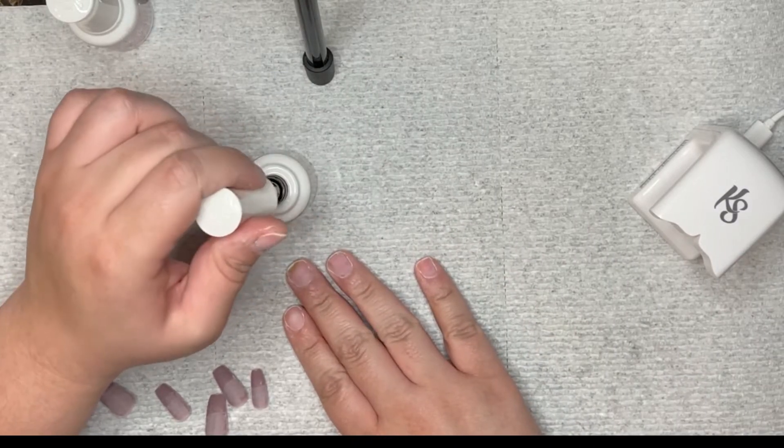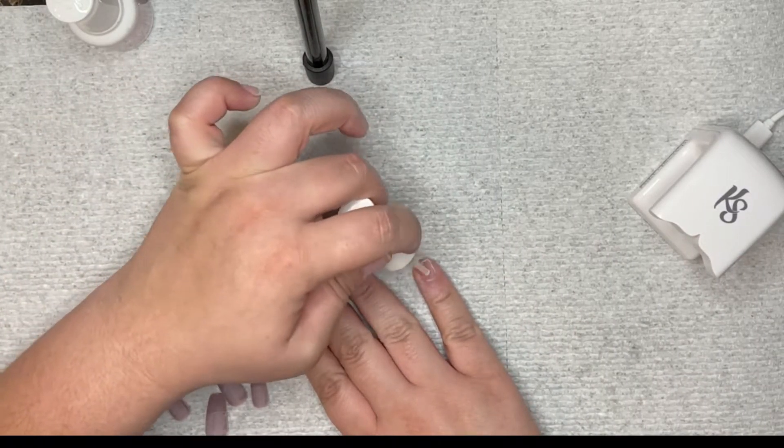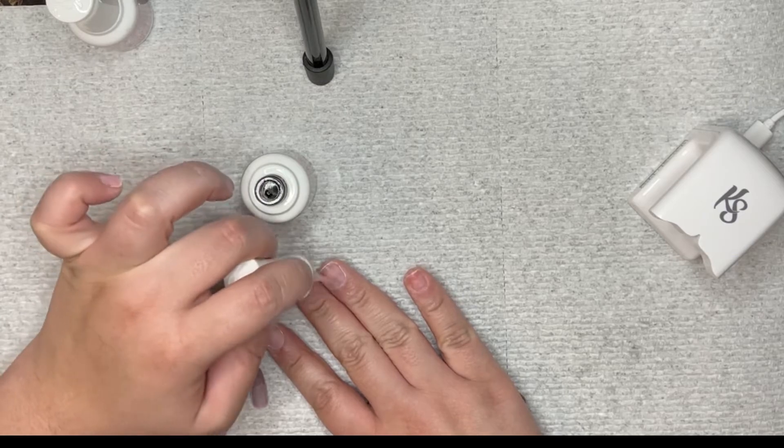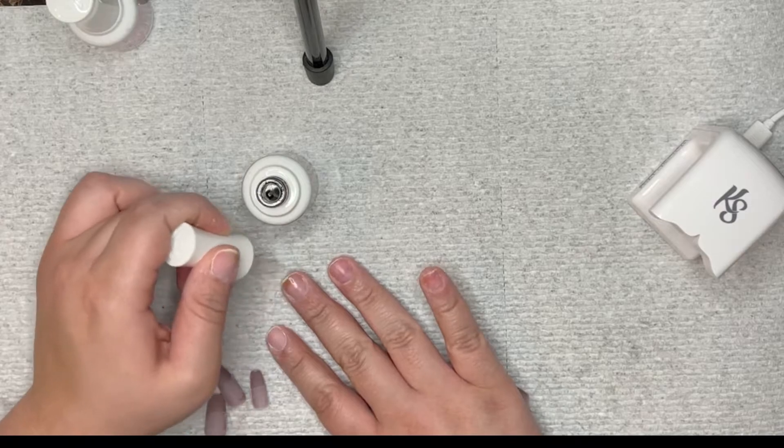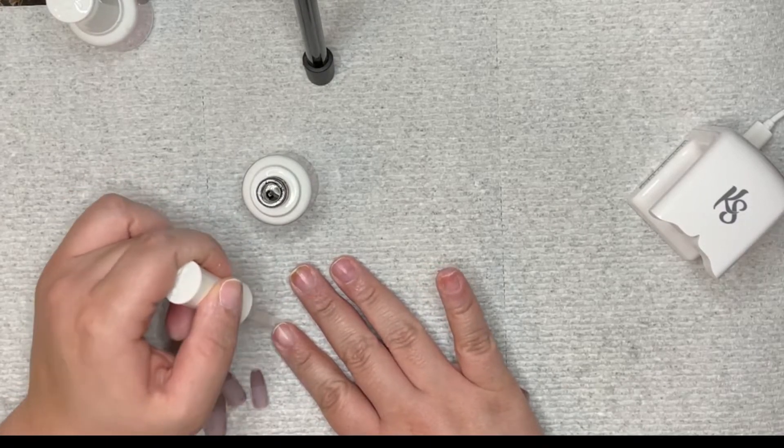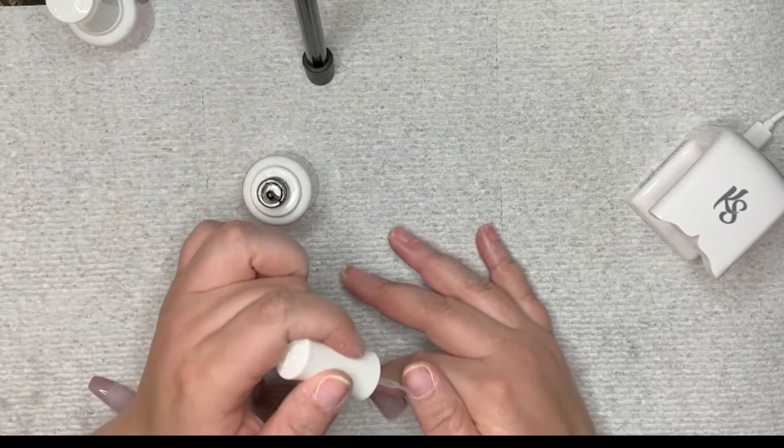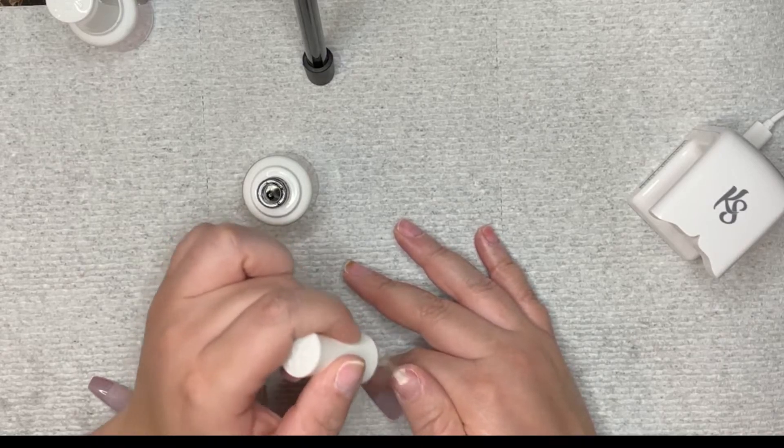As you can see, I have already etched the inside of the full cover tips. That's pretty much the best option you can get. Because if you do not etch them, they are plastic with like a shiny cover on top.